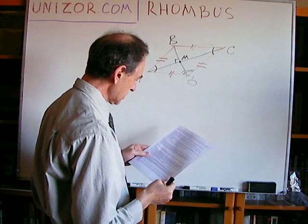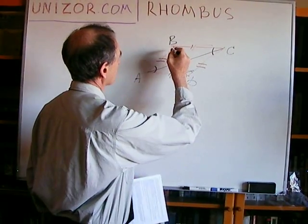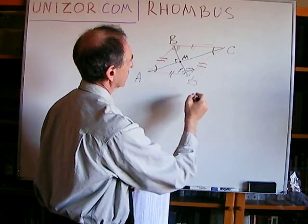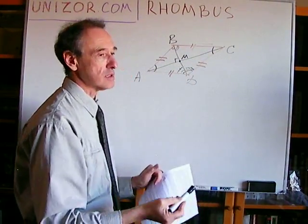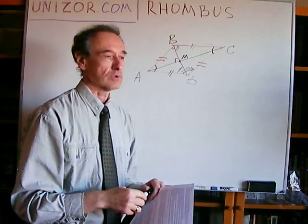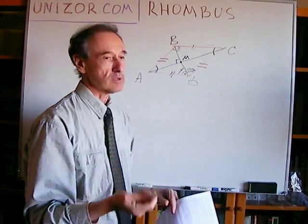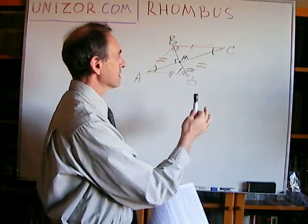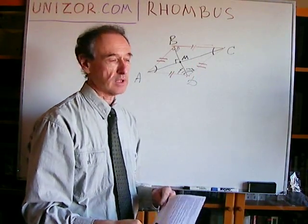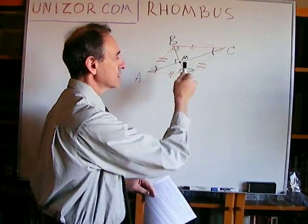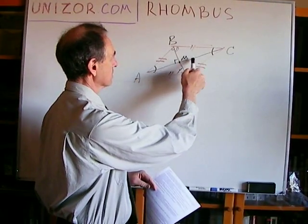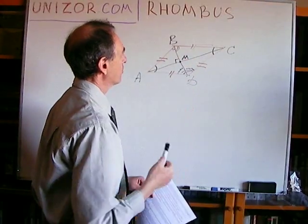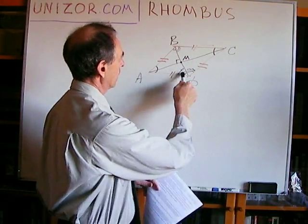That's the first theorem. The second is that the diagonals are angle bisectors — these angles are equal to each other, and these angles are equal to each other. It's very easy to derive from the fact that triangle ABC is an isosceles triangle, because again, the median is an angle bisector as well. So basically that's the proof — it uses the same approach as the perpendicularity of the diagonals, just a different property of the median in the isosceles triangle. So diagonals are perpendicular to each other and are angle bisectors.